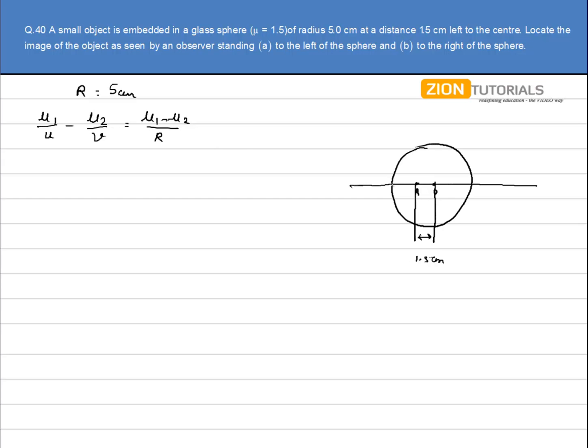Now first part is that the observer is on left of the sphere. That is over here. So u comes out to be 5 minus 1.5, that is 3.5, and if I take the sign convention it will be minus.